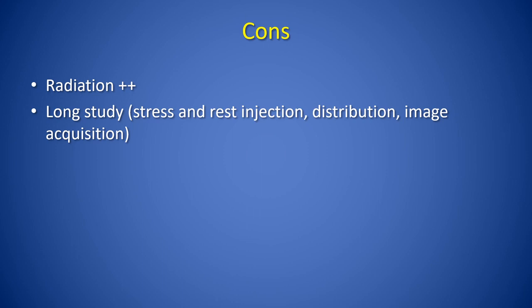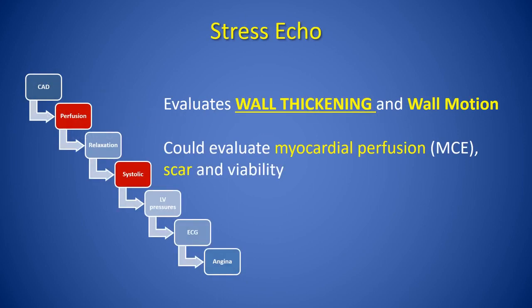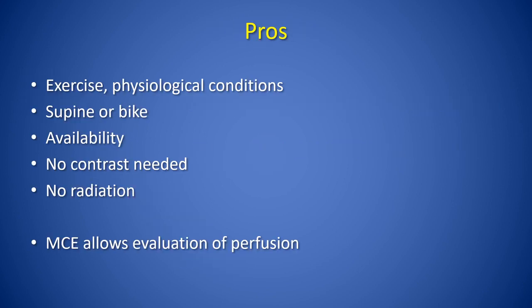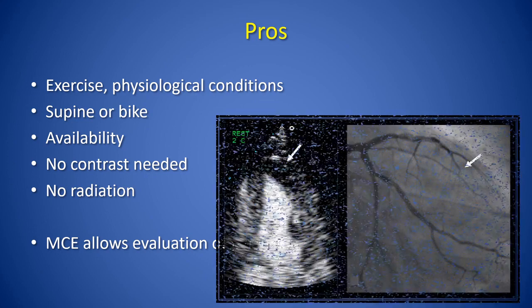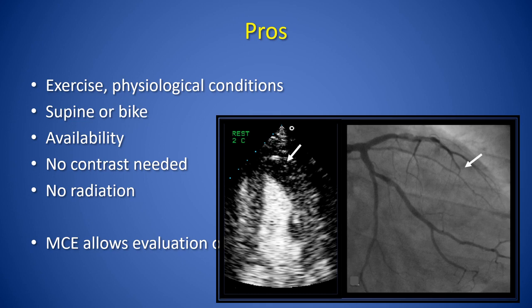Stress echo evaluates wall thickening and wall motion, and can also evaluate myocardial perfusion and scar, and assess viability with appropriate protocols. The advantages of stress echo include additive exercise physiology data, ready availability in most facilities, no radiation, and no contrast required—although echo enhancing agents can be very beneficial—and myocardial contrast imaging with perfusion is possible. Here you can see a case where a wall motion abnormality is not present but there is decreased myocardial perfusion in the distal LAD territory, which correlates with an occluded LAD shown on invasive imaging—and this is even without stress.